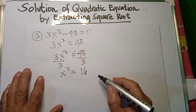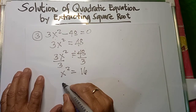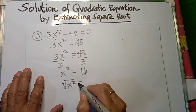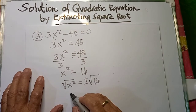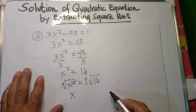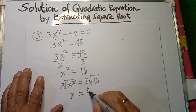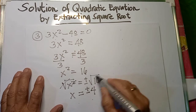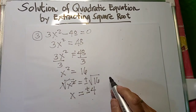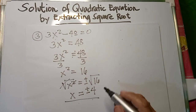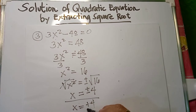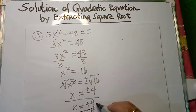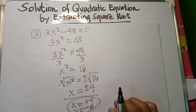Then apply extracting square root. So x squared becomes: square root of x squared is equal to plus or minus square root of 16. The squared cancels out, leaving x, which becomes equal to plus or minus 4, since the square root of 16 is equal to 4. So we have two values of x: x is equal to positive 4, and x is equal to negative 4.